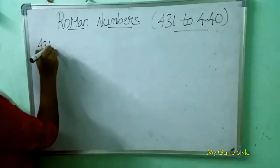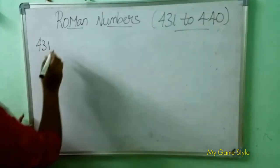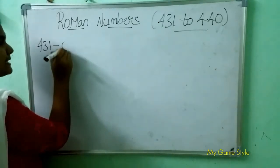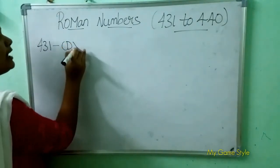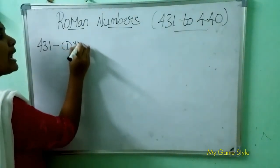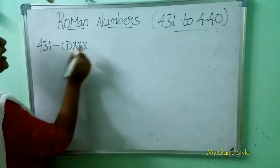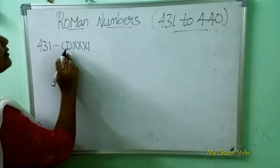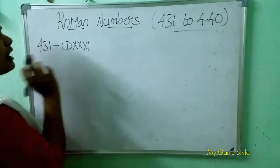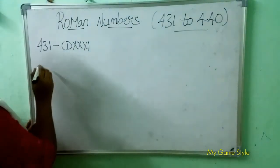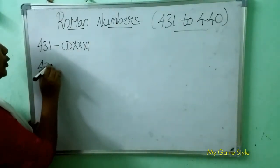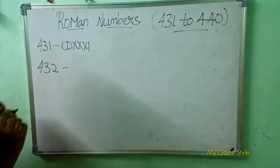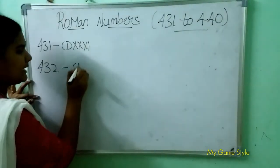431 — how to write 431 in Roman numerals? CD is 400, triple X is 30, I is 1. So this means 431. Next, 432 — now tell me how to write Roman number 432.